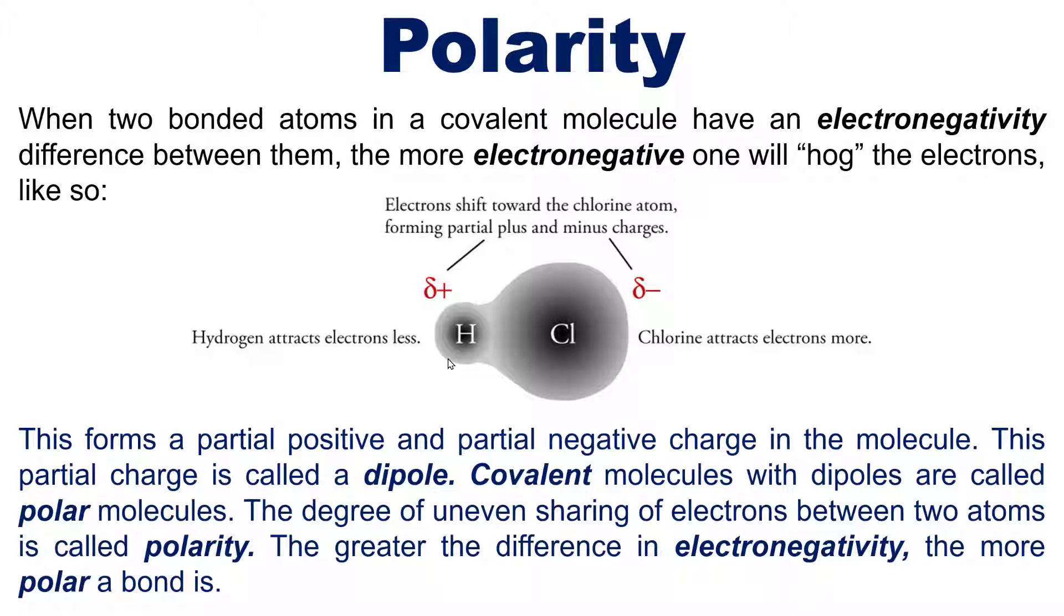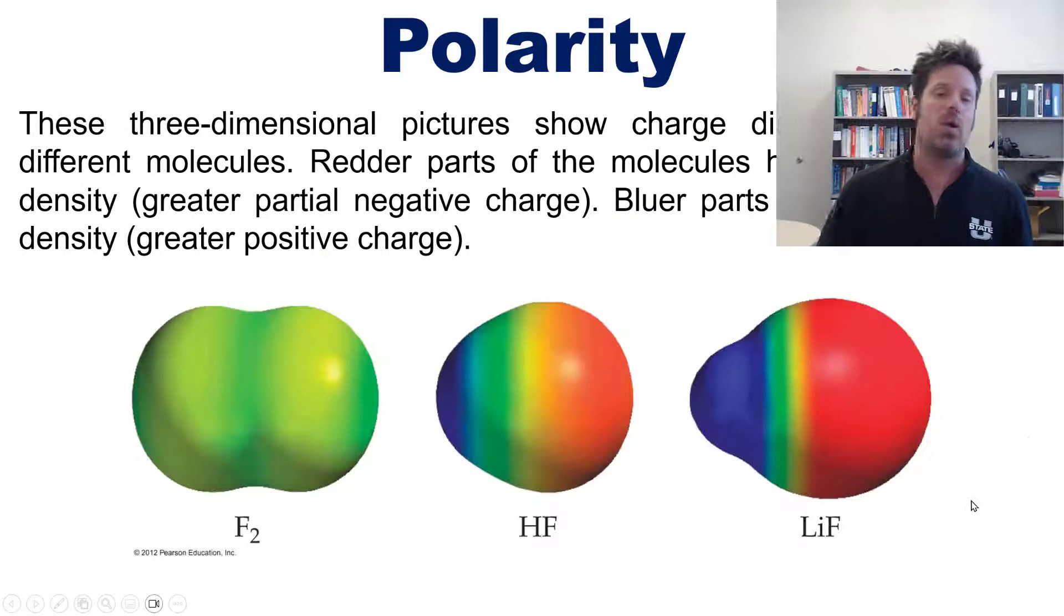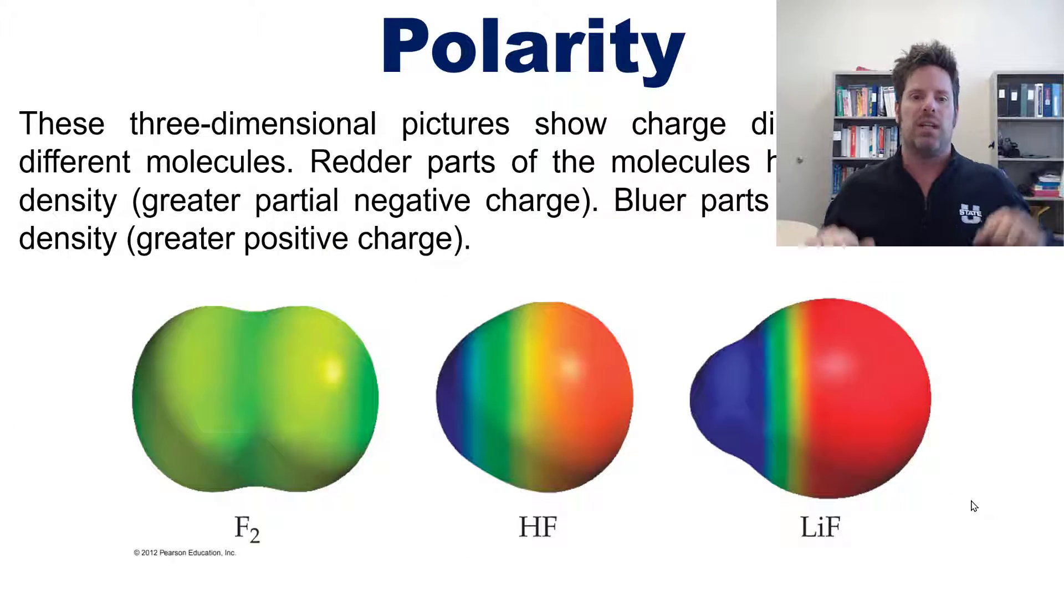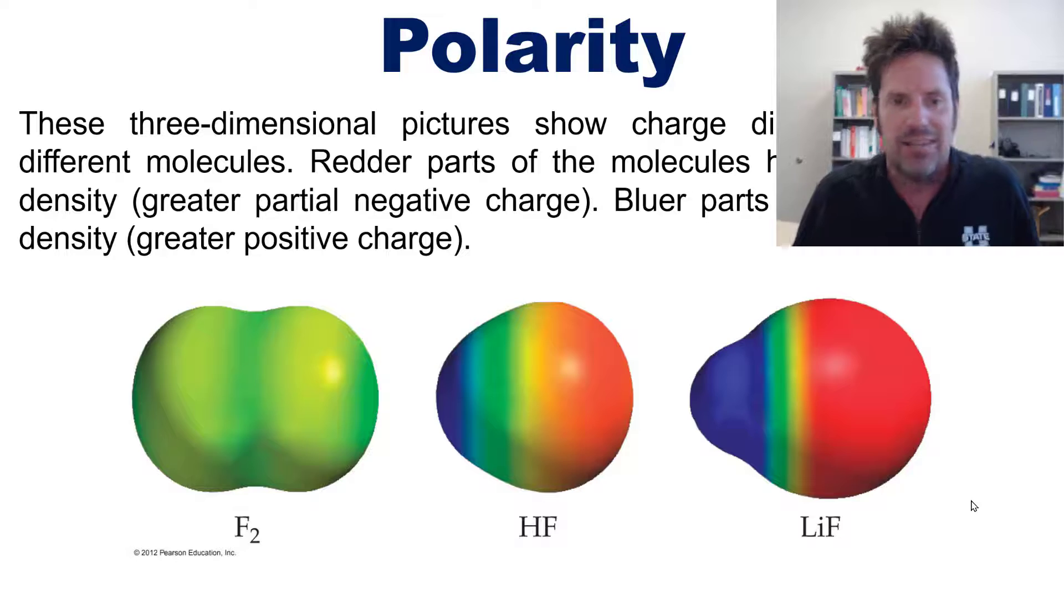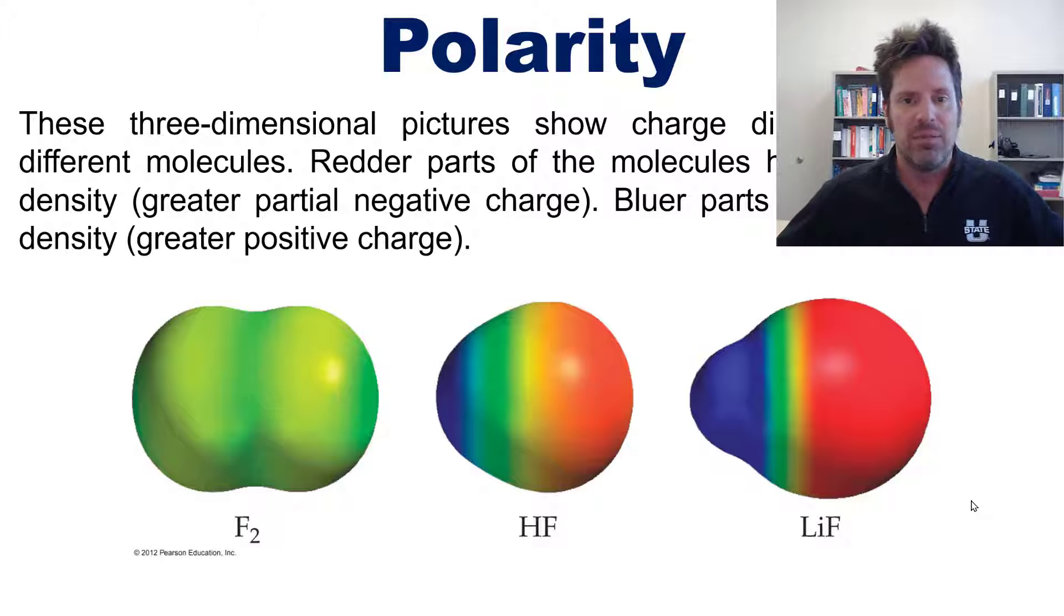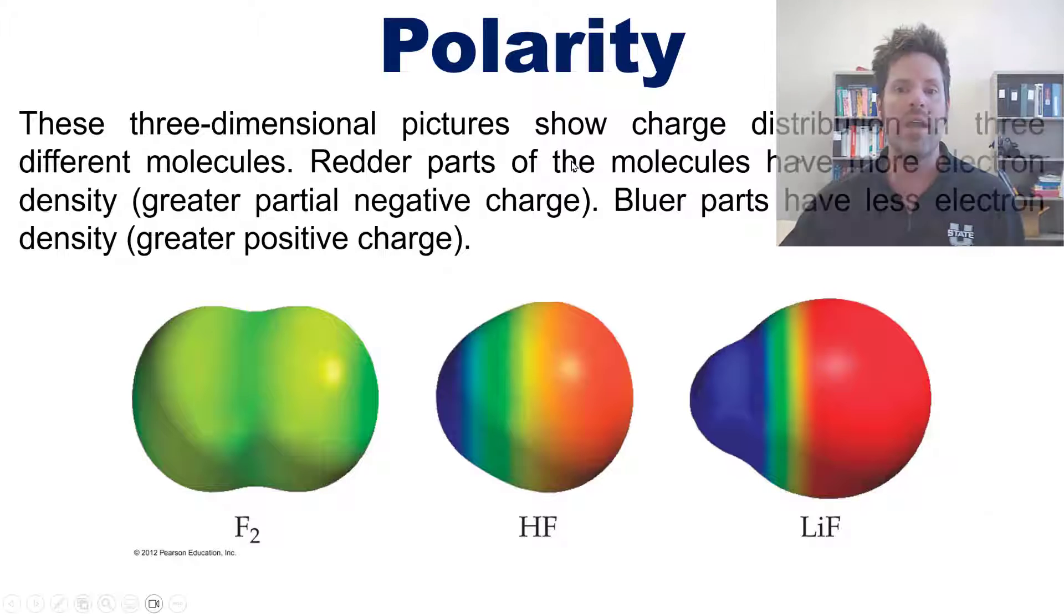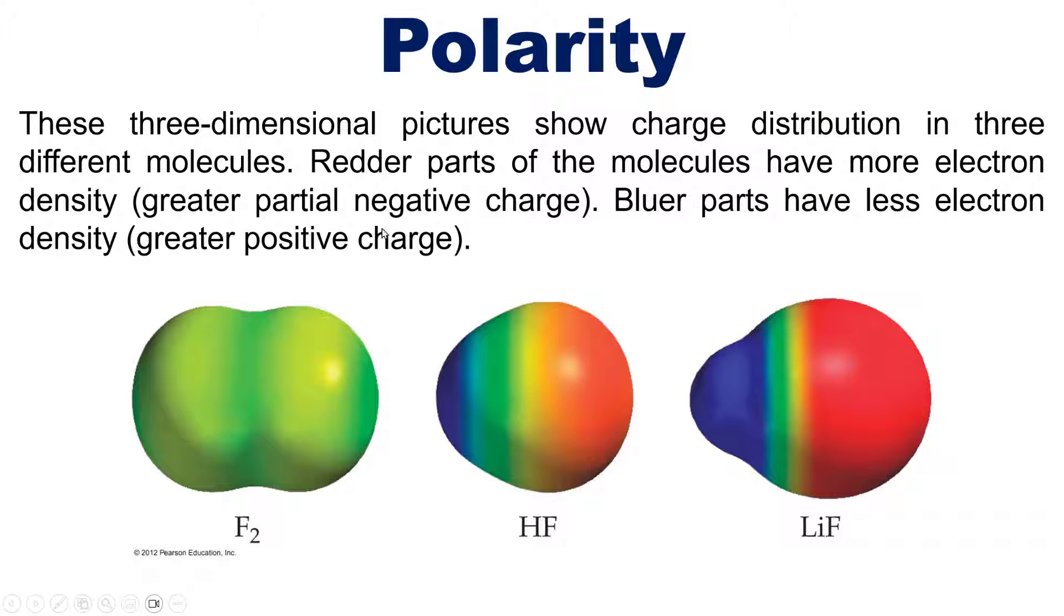So these three-dimensional—or actually, two-dimensional attempts at conveying three-dimensional reality—pictures show charge distributions in three different molecules. Redder parts of the molecules have more electron density, that is, a stronger partial negative charge, whereas bluer ones show less electron density, that is, a stronger partial positive charge. And as you can see, in the case of F2 with two fluorine atoms, because both F's are equally electronegative, there's no blue or red anywhere. The sharing of the electrons is completely even.